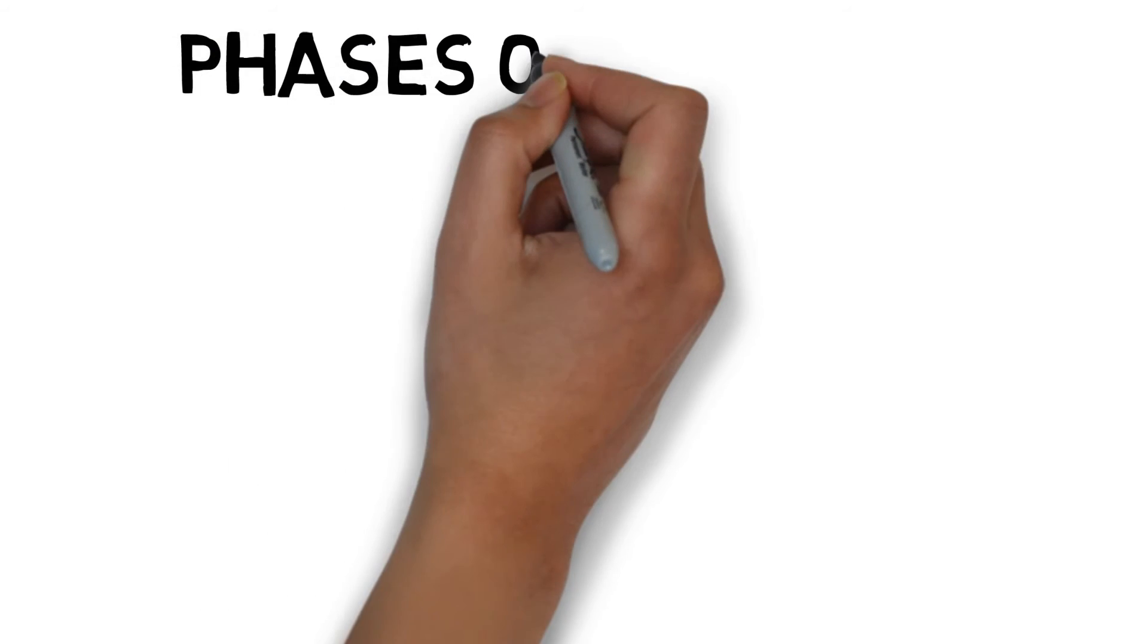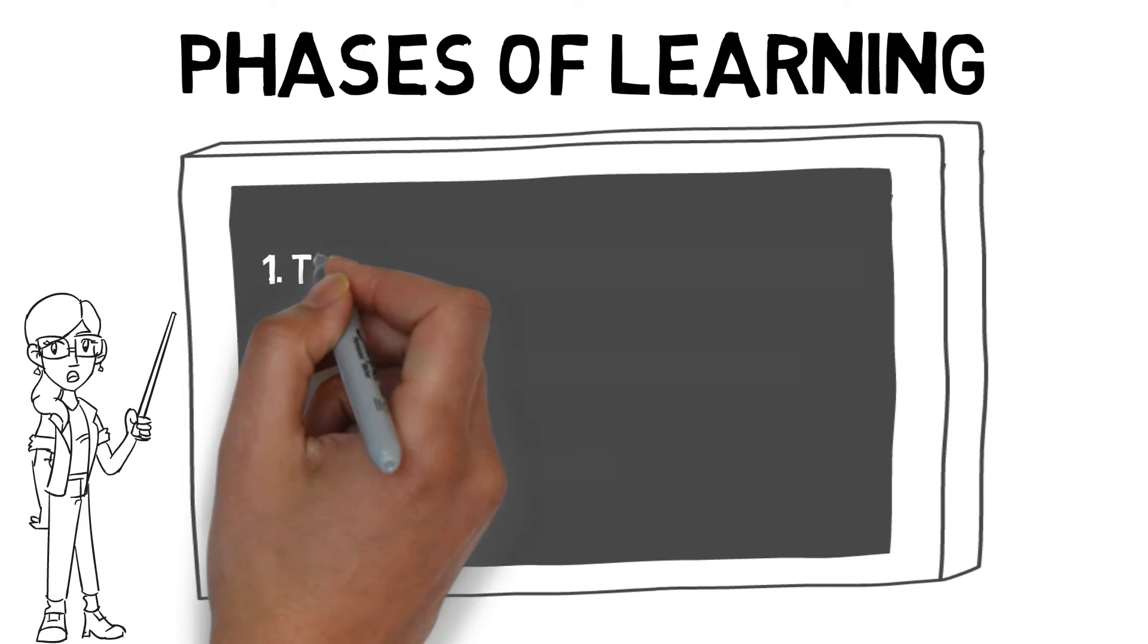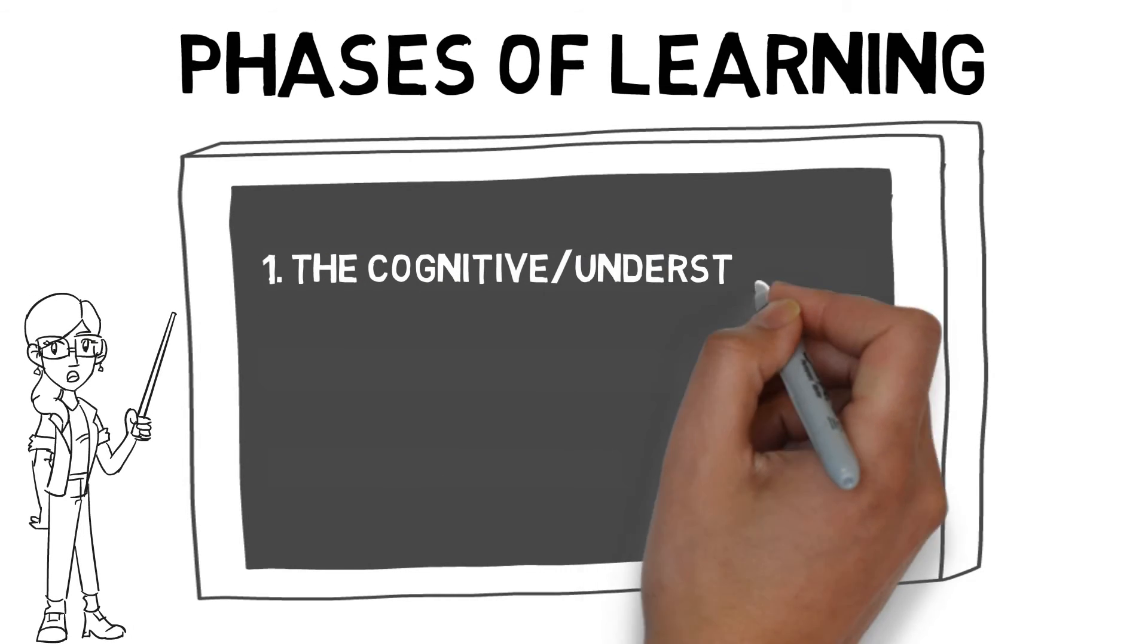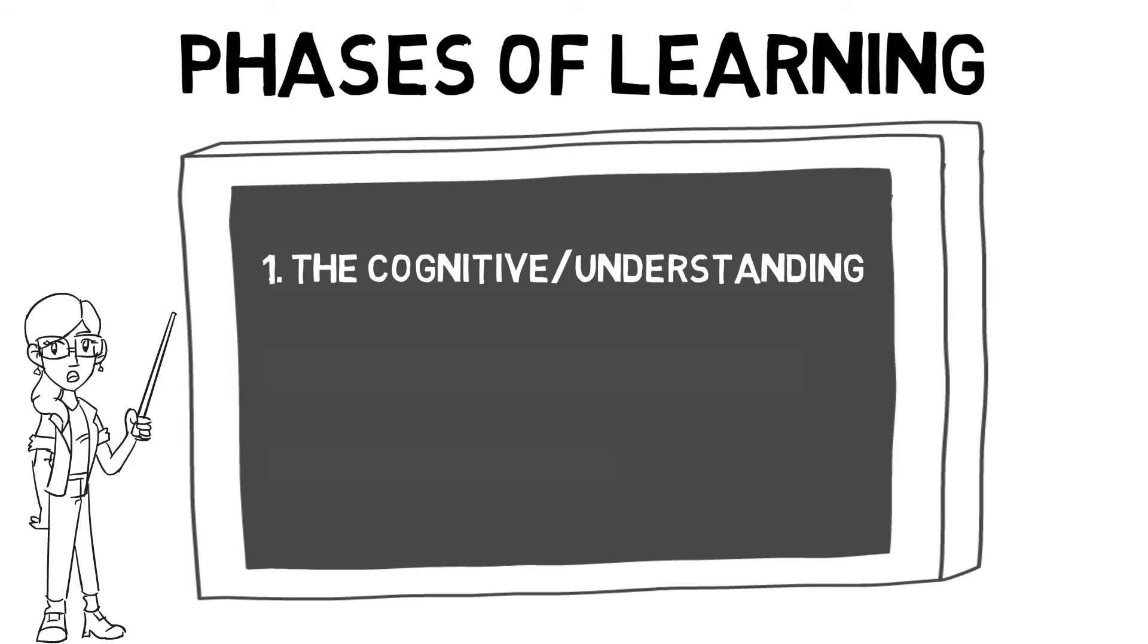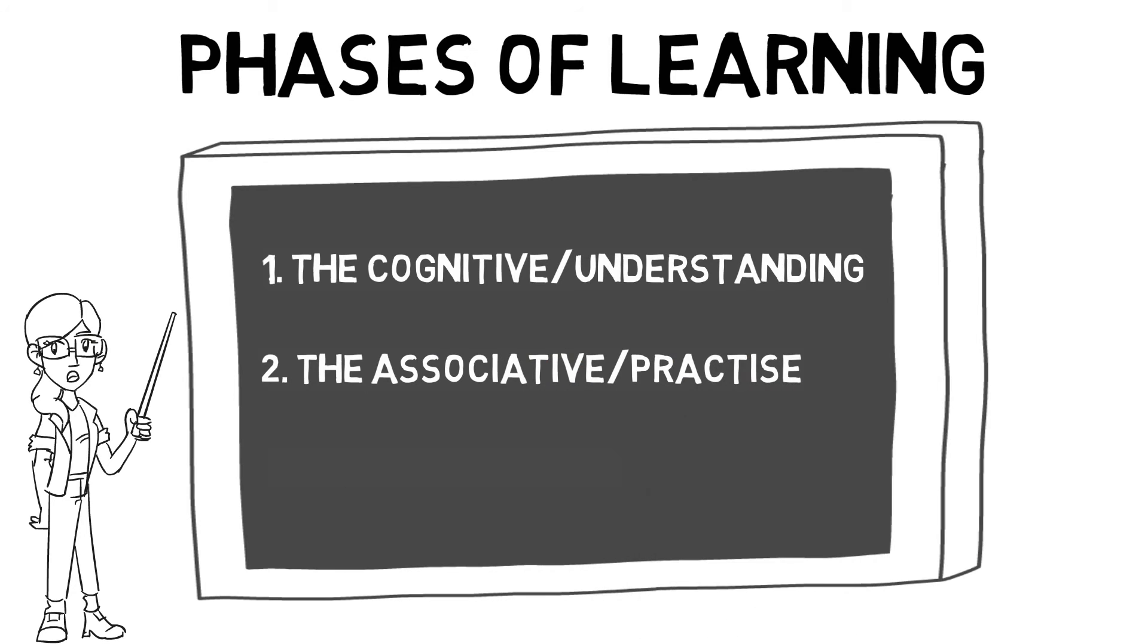As we learn, we go through different phases of learning. The cognitive or understanding phase has inconsistent results and still relies on coaching cues. The associative or practice phase has more consistent results, with more complex elements requiring more work. And the autonomous phase, which produces consistent and fluid performances. The correct motor programs are stored in the long-term memory.